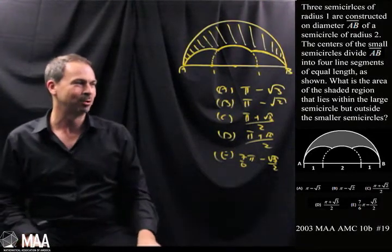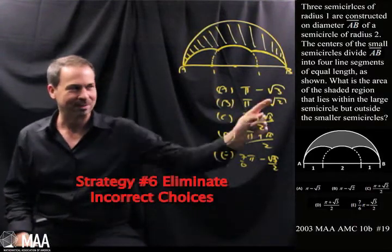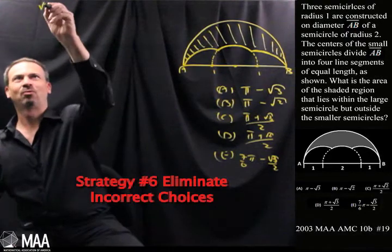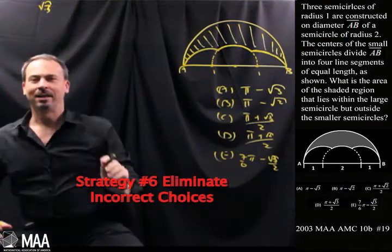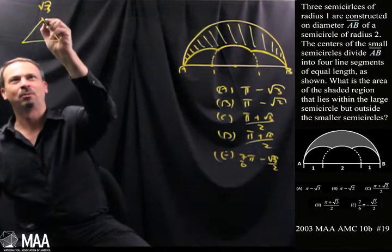So let's do strategy number 6 which is to eliminate incorrect choices. And what I'm really going to focus on is this √3, √2 business. So when I see √3 in a geometry problem, it really only comes up in one place in geometry. Half equilateral triangles, you know, most people call them 30, 60, 90 triangles. There's lots of √3s in those guys.